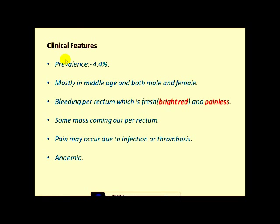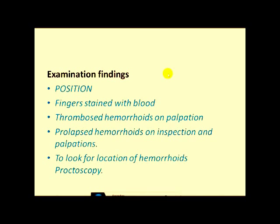Clinical features: prevalence is 4.4% of the total population, which is very high. It mostly affects middle age and both males and females. Bleeding is usually painless and fresh, meaning bright red — these are important points. Some patients complain of a mass coming out per rectum. Pain may occur when there is infection or thrombosed hemorrhoids. In severe cases there can be anemia.